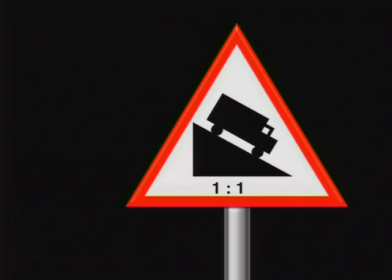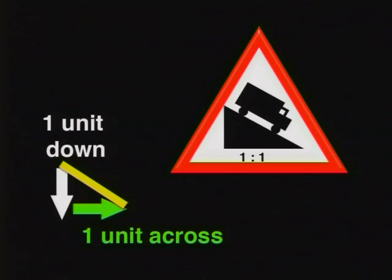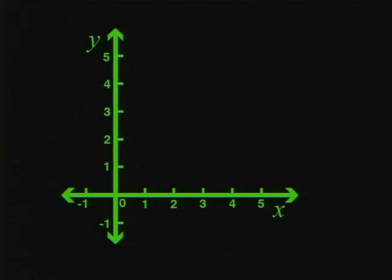What about a slope of one to one? For every one meter you go down, you move the same distance horizontally or across. Now we are ready to look at the gradient of a line on the Cartesian plane. To begin with, we focus on the axes. On the x-axis, the x values are increasing from left to right. Similarly, the y values are increasing from the bottom to the top.